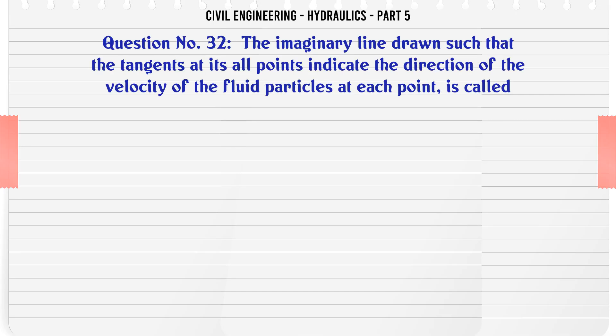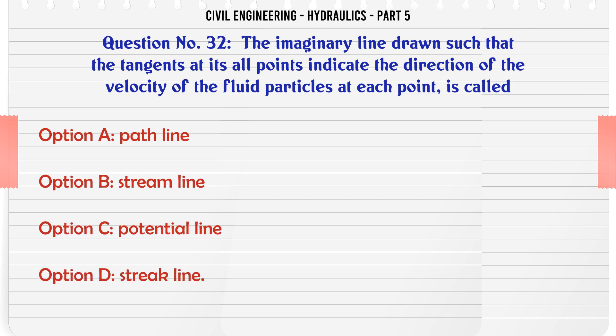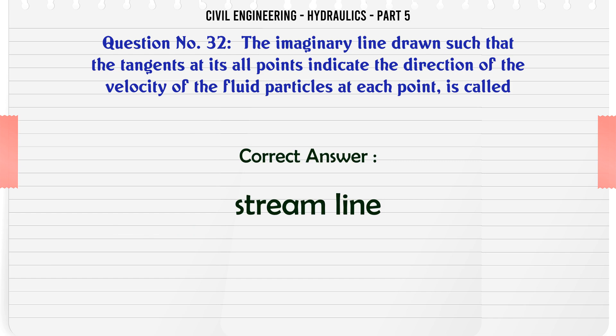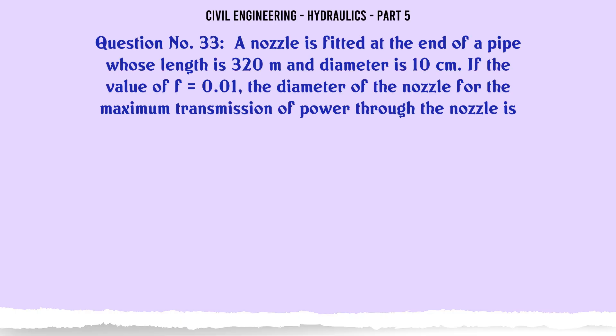An imaginary line drawn such that the tangents at all its points indicate the direction of the velocity of the fluid particles at each point is called: A. path line, B. stream line, C. potential line, D. streak line. The correct answer is stream line.